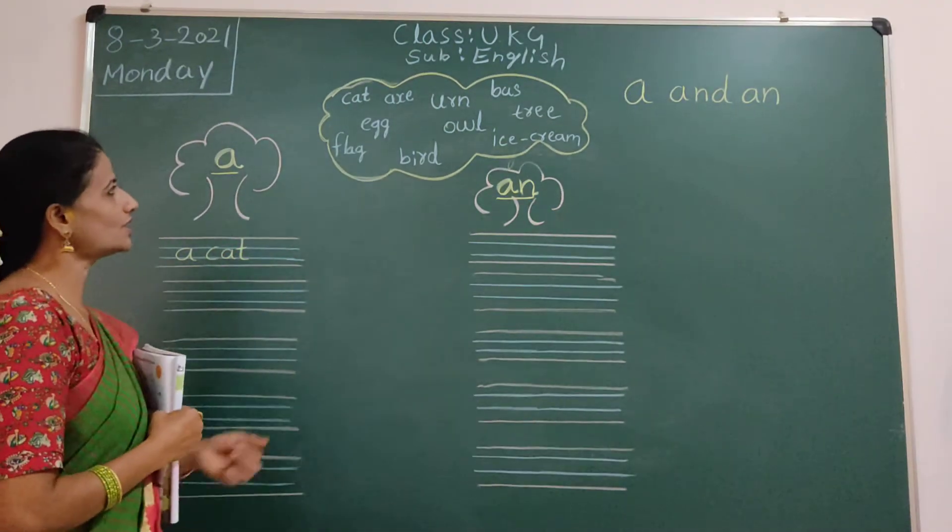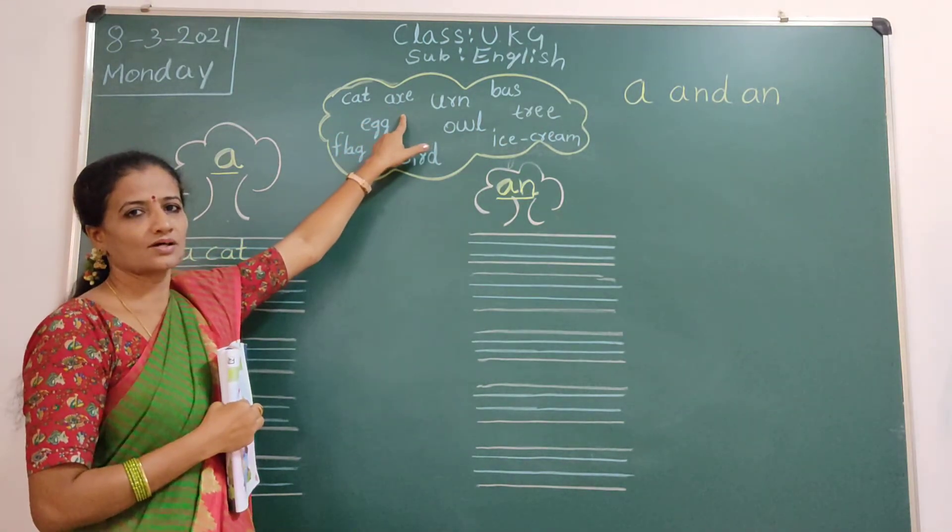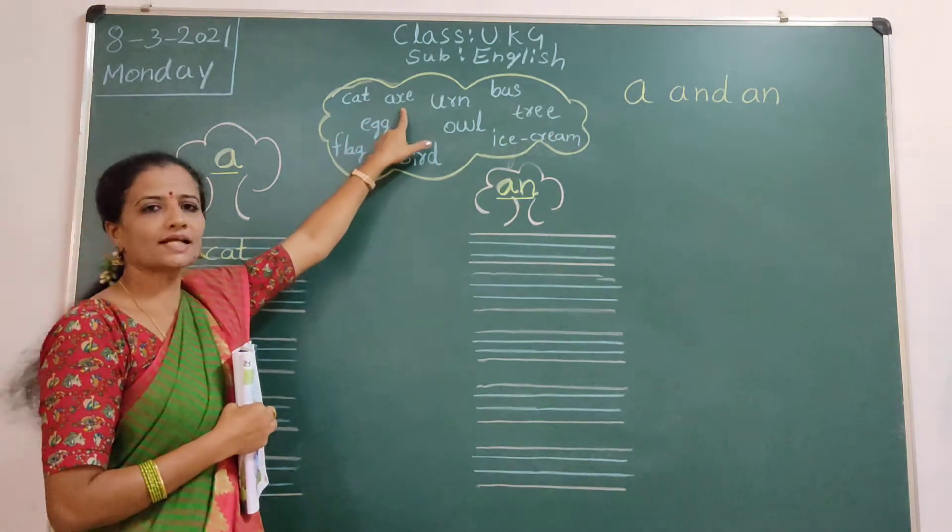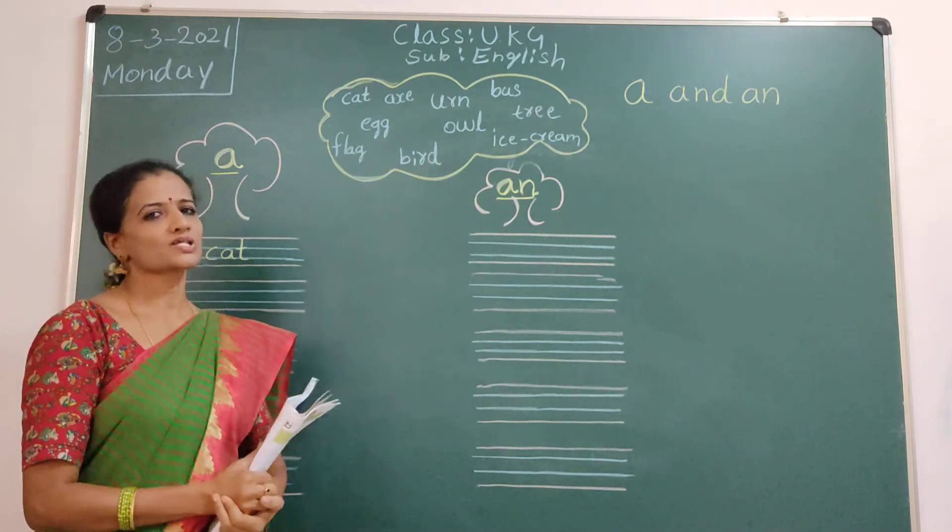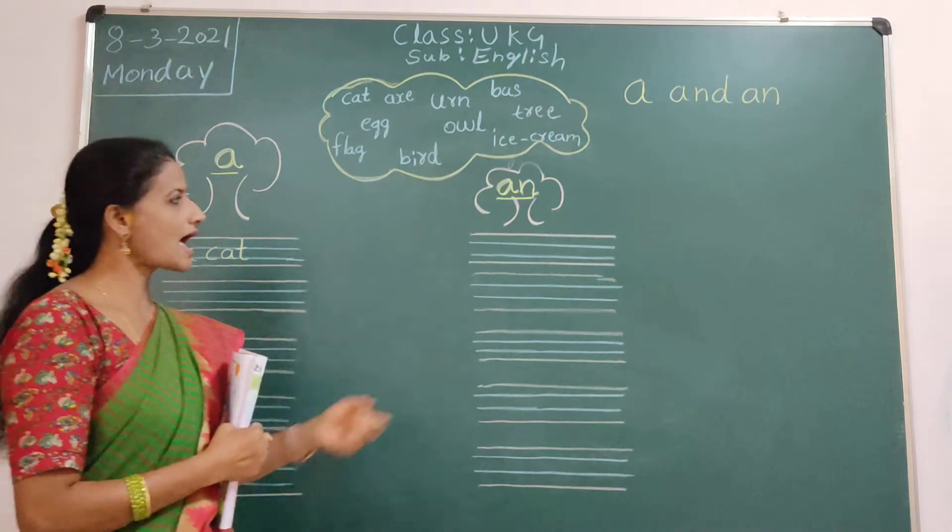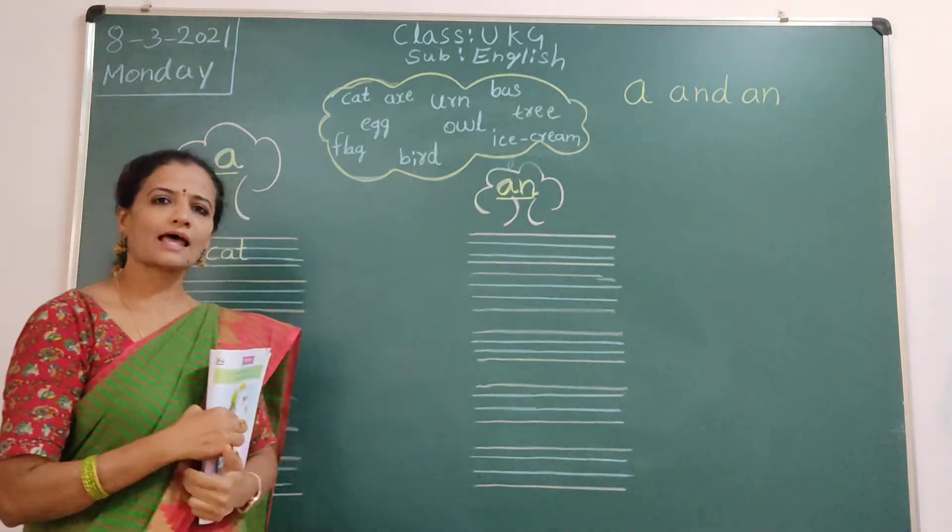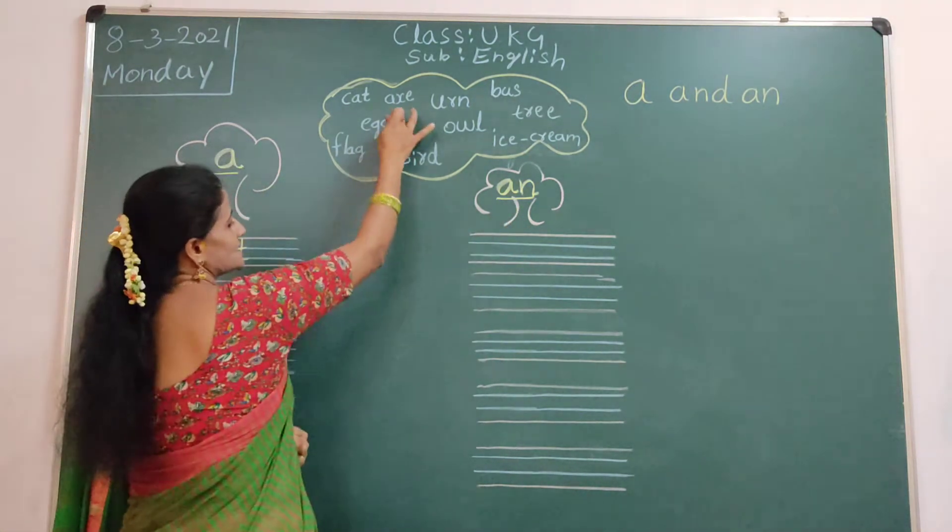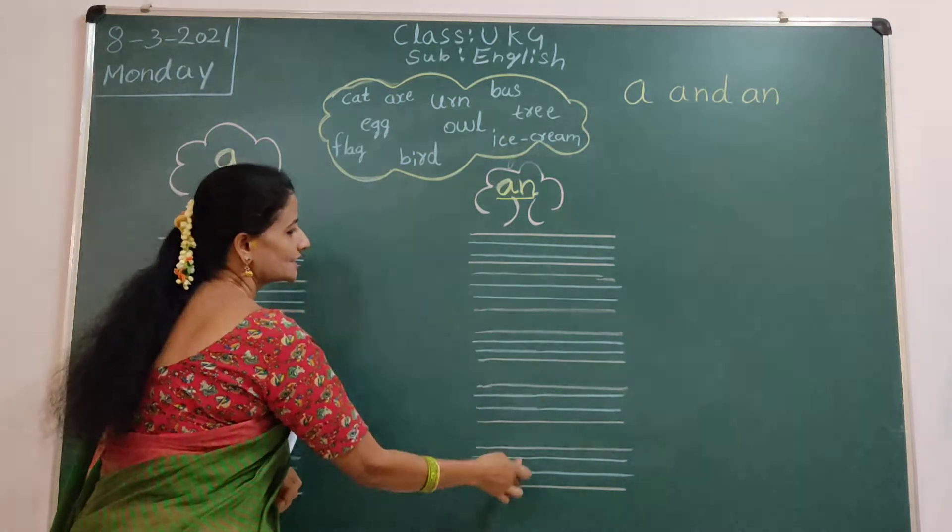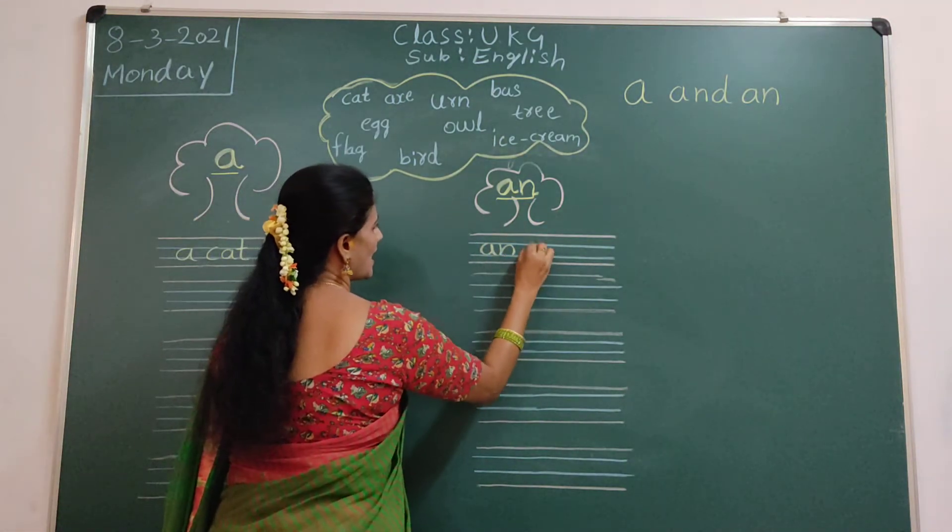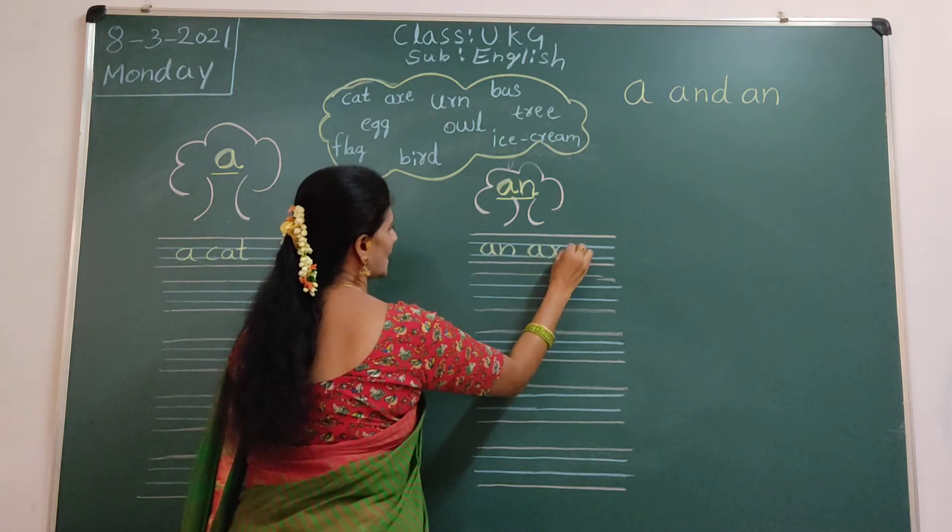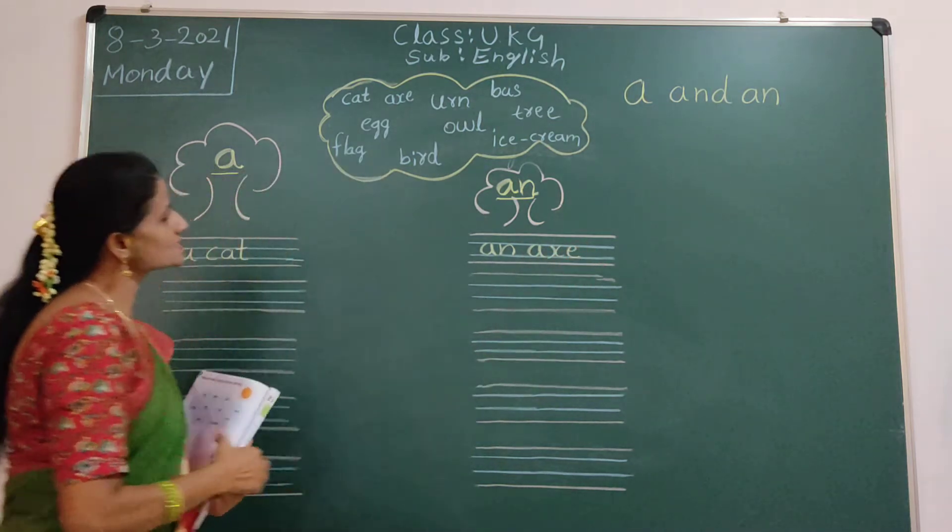So, second word. Axe. Axe. So, first letter is open sound. A sound came, no? So, we will use An. An axe. Axe. We will write it this side. A, N and axe. A, X, E, axe. Axe. Okay.